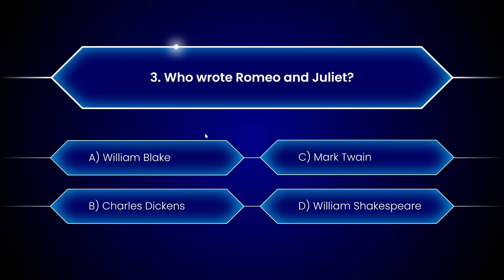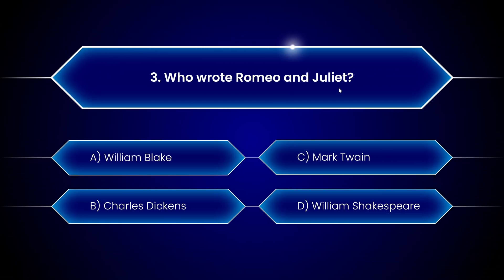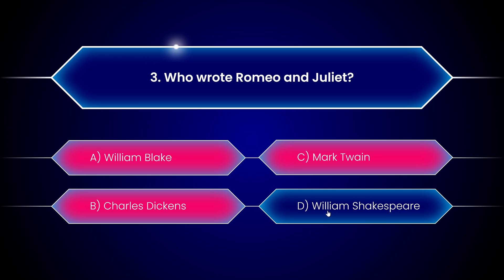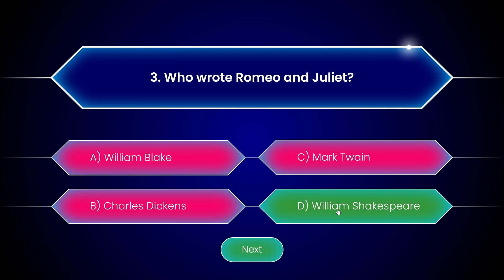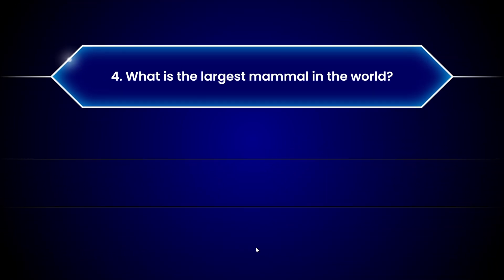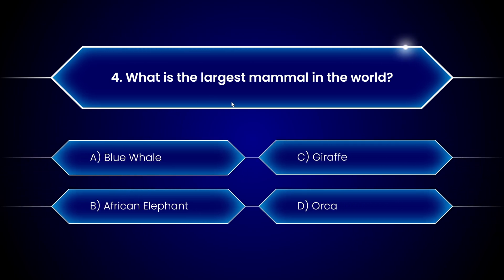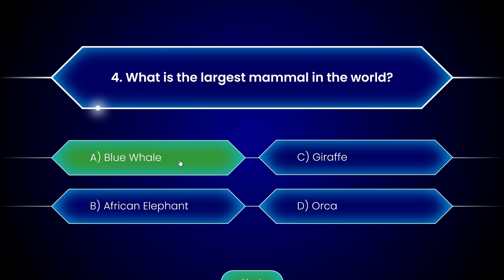Now, who wrote Romeo and Juliet? Not this guy, not this guy, maybe Mark Twain — nope, it has to be William Shakespeare because it's the last possible answer. And what is the largest mammal in the world? It should be perhaps the blue whale.